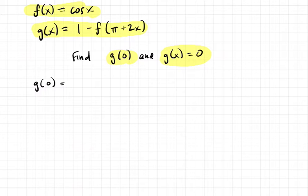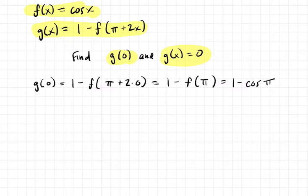So if you plug 0 into g, that would be 1 minus f of pi plus 2 times 0. And that tells you that's 1 minus f of just pi, right? Because pi plus 2 times 0 is just pi. And that means you have 1 minus the cosine of pi, because f is the cosine of whatever your input is. And the cosine of pi is, if you think about a unit circle, it's just negative 1. So it's 1 minus negative 1, which is 2.